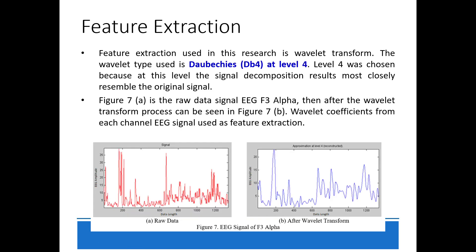Then we proceed to feature extraction. The feature extraction used in this research is wavelet transform. The wavelet type used is the Daubechies at level 4. Level 4 was chosen because at this level the signal decomposition result most closely resembles the original signal. Figure 7a shows the raw EEG F3 alpha signal, and after the wavelet transform process, as seen in figure 7b, the wavelet coefficients from each EEG channel are used as features.